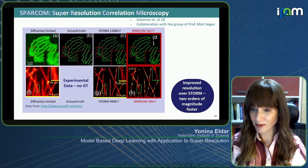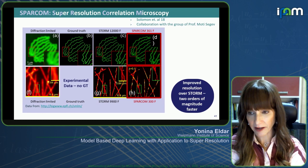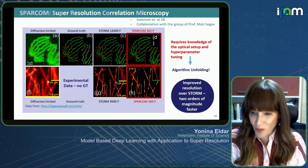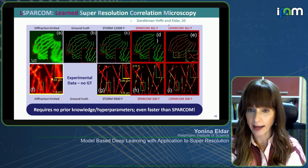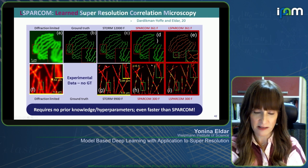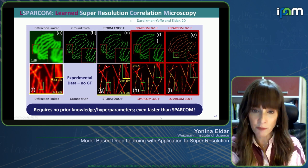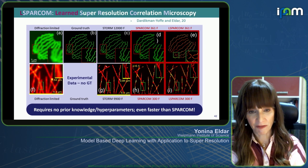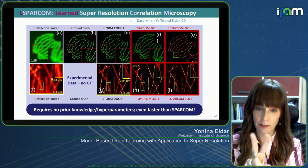The difficulty is that we still have to tune hyperparameters and estimate the underlying PSF, which can be challenging in practice. So it's natural to see if unfolding can overcome these challenges. We call this L-SPARCUM, learned SPARCUM — we perform unfolding on the SPARCUM method. This gives even better performance than SPARCUM, with no prior knowledge required, no PSF estimation needed, no hyperparameter tuning, and very fast recovery. Because we're doing unfolding, we still have an interpretable method, and all the training was done on a single input-output pair — minimal training data required.